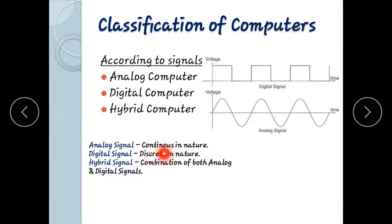An analog signal is continuous in nature. A digital signal is discrete in nature — it is in the form of binary values, 0 and 1. A hybrid signal is a combination of both analog and digital signals.